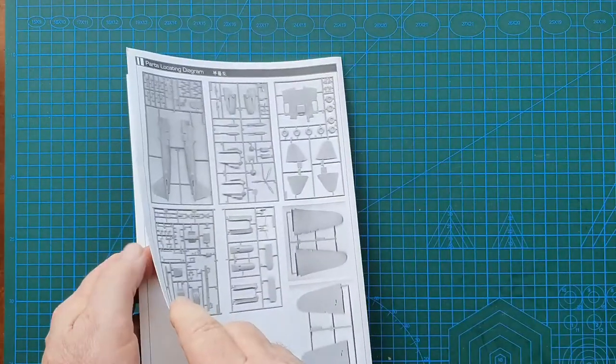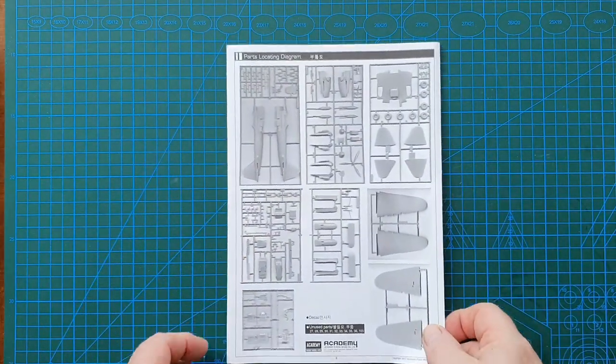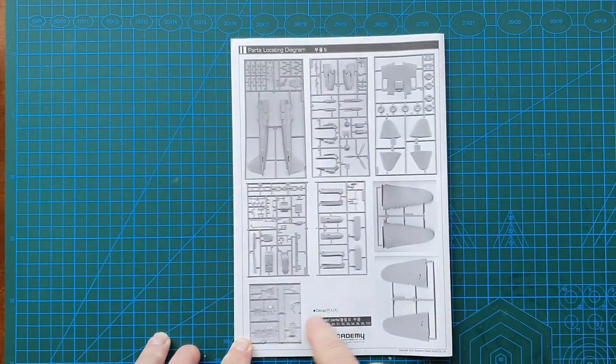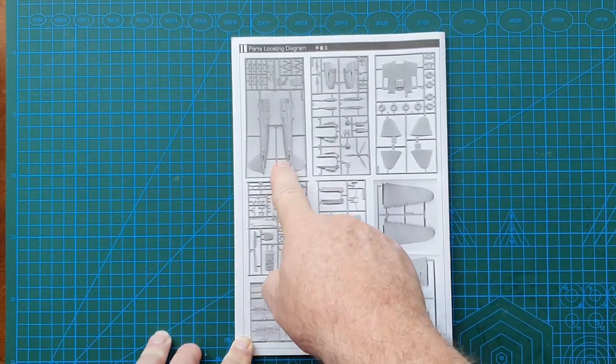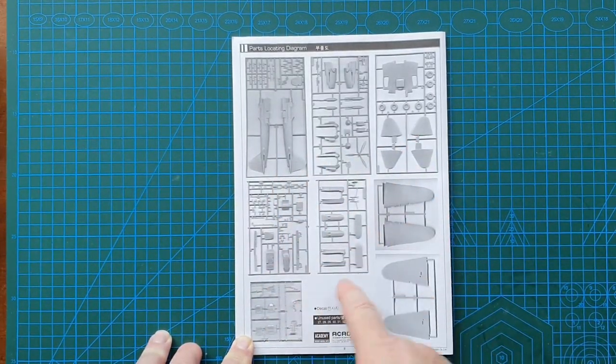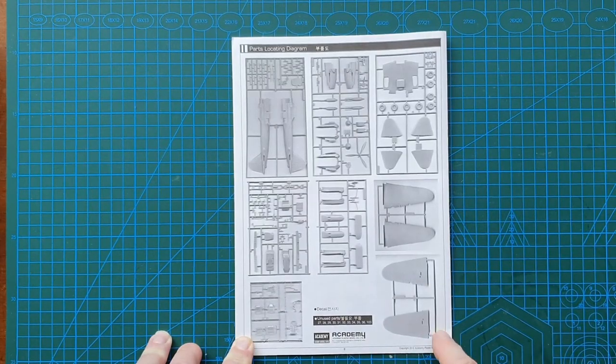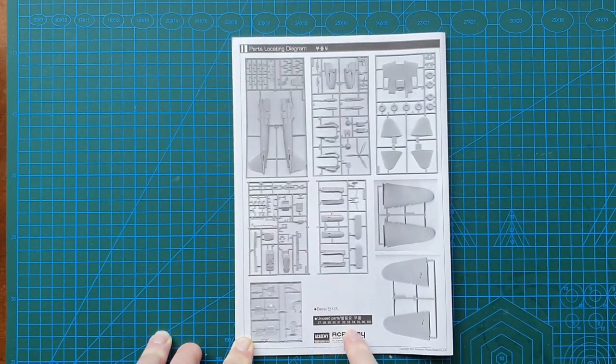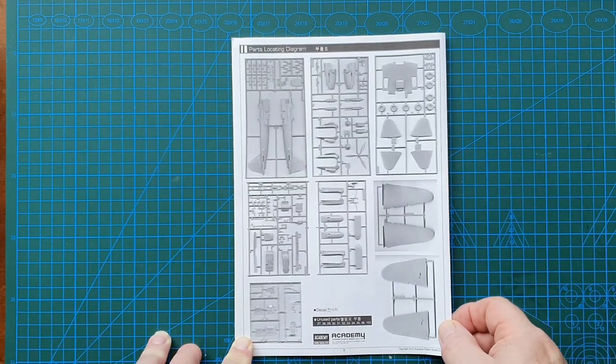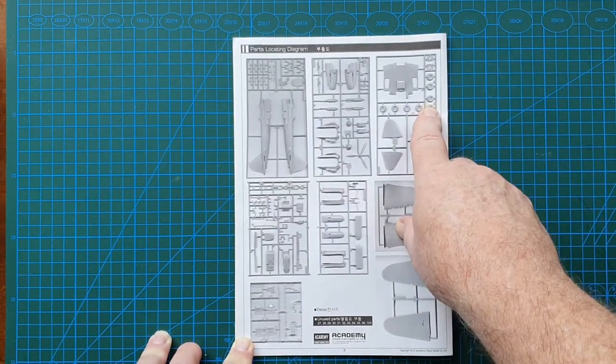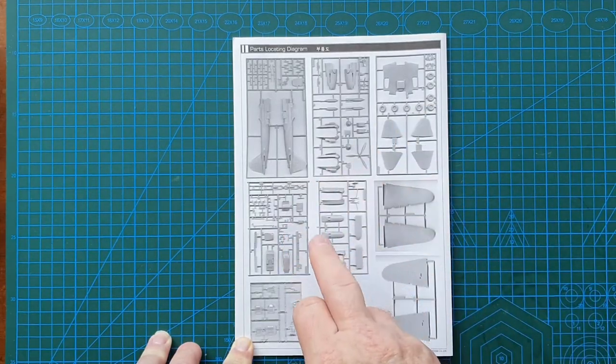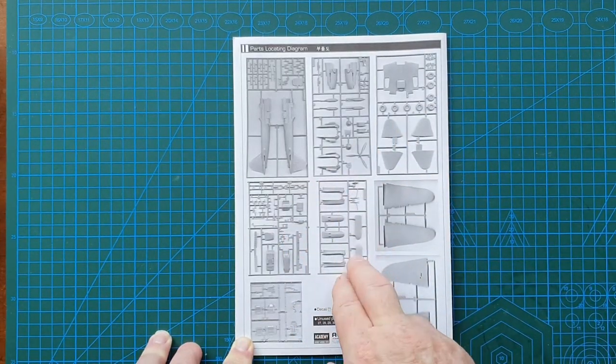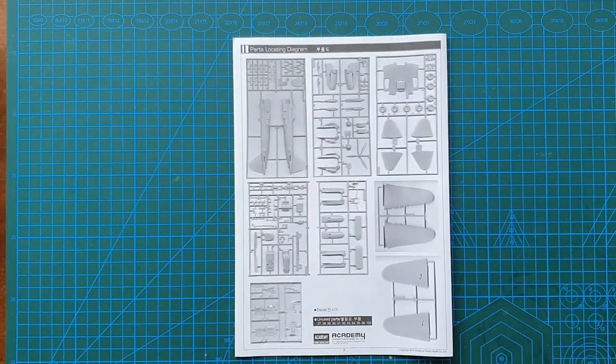Here's the sprue layout—these are actual photos of the sprues, not drawings. There are a couple of unused parts but not many, so that's pretty good. It does have wheels in it, which means if you wanted to you could actually make it the wheeled version and not the ski version.